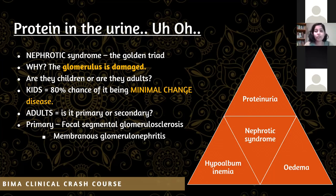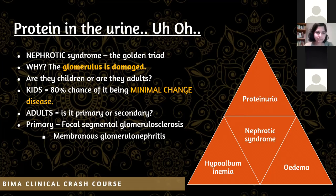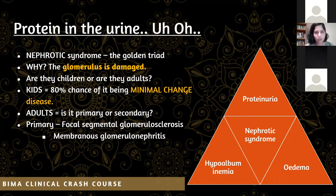With nephrotic syndrome, always ask: are they a child or an adult? In children, 80% of cases are minimal change disease — some form of glomerular damage — and you treat with steroids. For any suspected glomerulonephritis, treat with steroids and assess responsiveness. In adults, ask if it's primary or secondary. The most common primary cause of nephrotic syndrome in adults is focal segmental glomerulosclerosis.